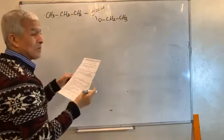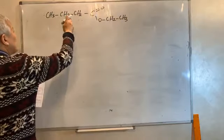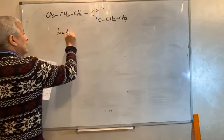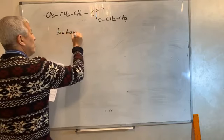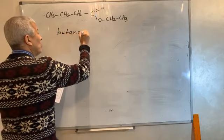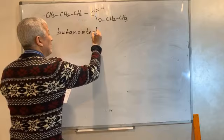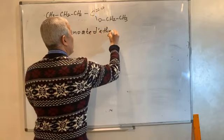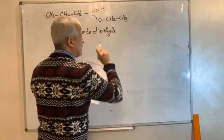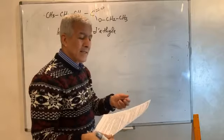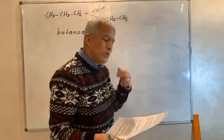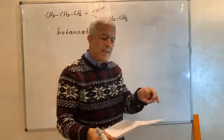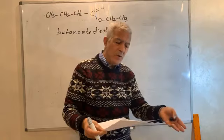Alors, ils ont donné le nom. En comptant 1, 2, 3, 4 carbones, c'est butanoate d'éthyle. Bien sûr, dans l'exercice, ils n'ont pas demandé le nom de cet ester. C'est l'exercice qui a donné le nom.